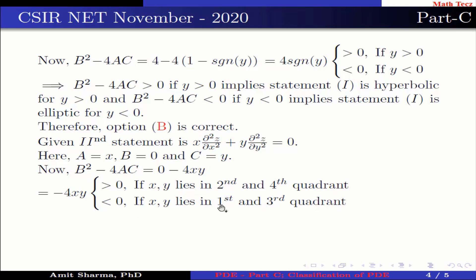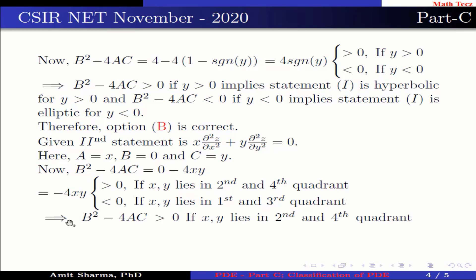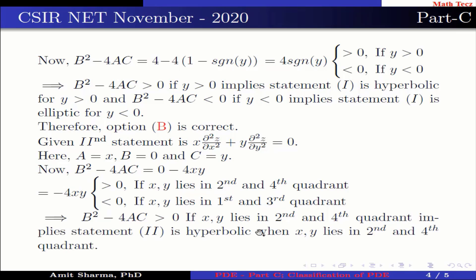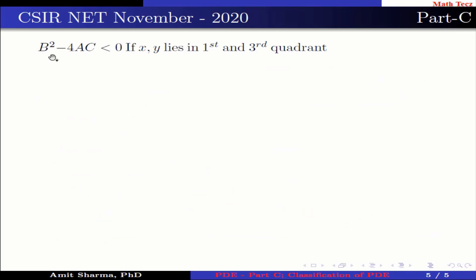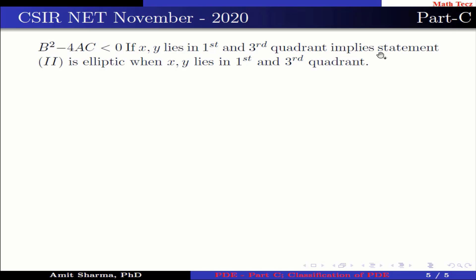B² − 4AC < 0 when x and y lie in the first and third quadrants. Therefore, statement two is hyperbolic when (x, y) lies in the second and fourth quadrants, and elliptic when (x, y) lies in the first and third quadrants. Therefore, option D is correct.